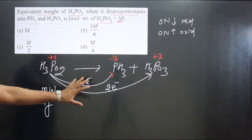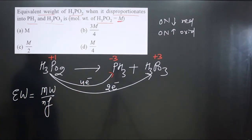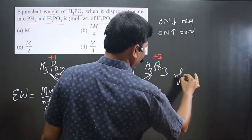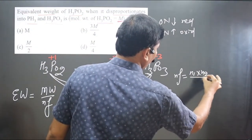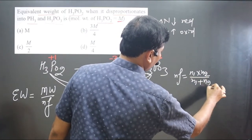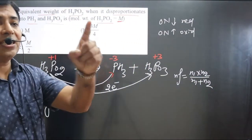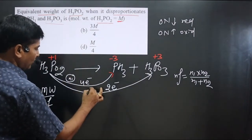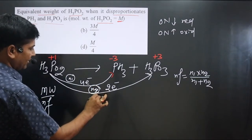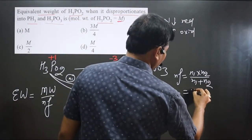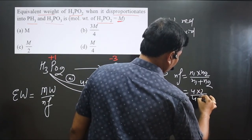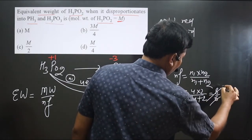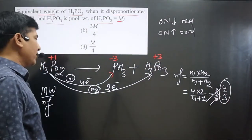We now have the gain of electrons (4) and the loss of electrons (2). To calculate the n-factor for a disproportionate redox reaction, we apply the formula: n-factor = (n1 × n2) / (n1 + n2). Substituting n1 = 4 and n2 = 2: (4 × 2) / (4 + 2) = 8/6.